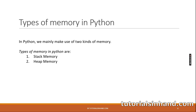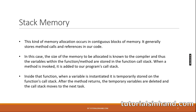In Python, two types of memory are used: stack memory and heap memory. Stack memory allocation occurs in contiguous blocks of memory and generally stores method calls and references. The size of the memory to be allocated is known to the compiler, and variables within a function are stored in the function call stack. When a method is invoked, it is added to the program's call stack. Inside the function, a variable is temporarily stored on the function's call stack. After the method returns, the temporary variables are deleted and the call stack moves to the next task.